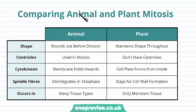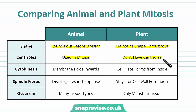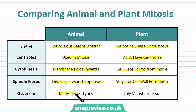Comparing animal and plant mitosis: animal cells change shape before dividing whereas plant cells maintain their shape throughout. Animal cells use centrioles; plant cells don't — spindles arise from the cytoplasm. In animal cytokinesis the membrane folds inwards; in plants a cell plate forms inside to separate the two cells. Spindle fibers in animal cells disintegrate during telophase, but in plant cells they remain to help form the cell wall. Finally, mitosis can occur in most animal tissue types, whereas in plants it only occurs in meristem tissue.